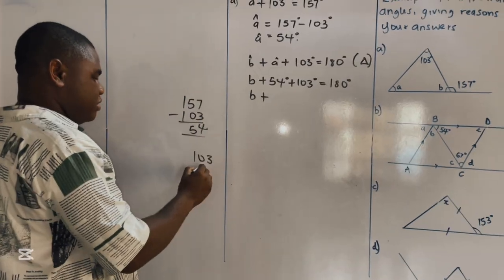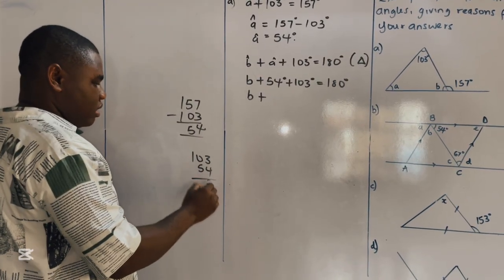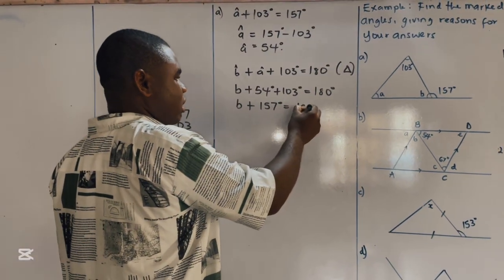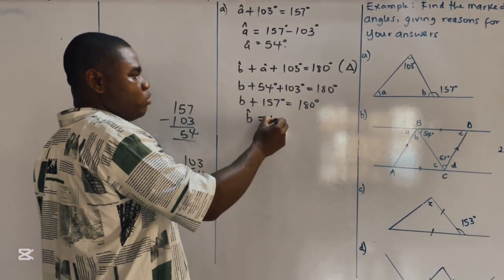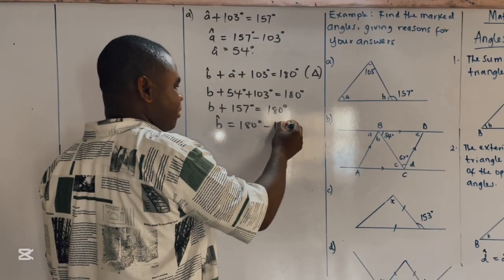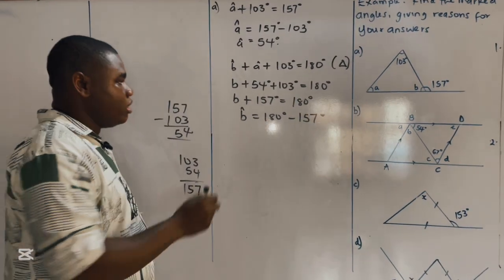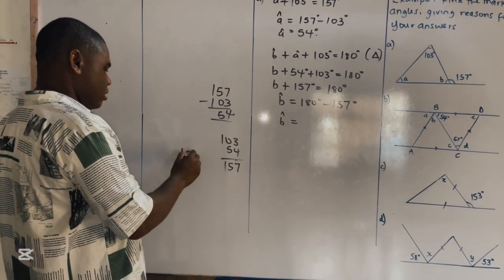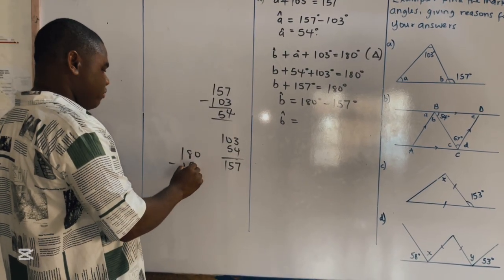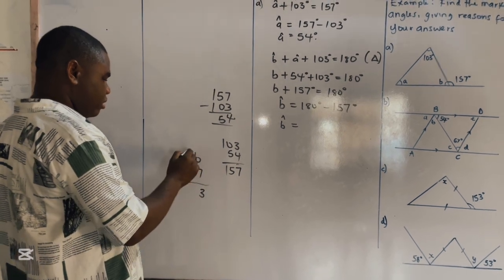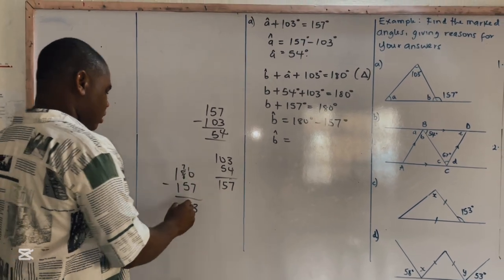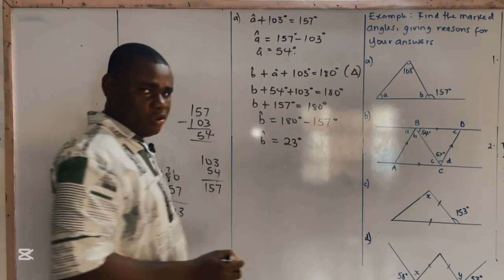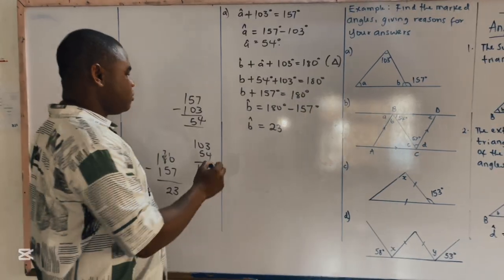So B plus 103 plus 54 gives us 157 degrees, which equals 180 degrees. Therefore angle B equals 180 degrees minus 157, which gives us 23 degrees.